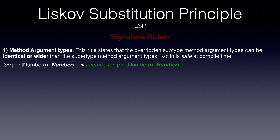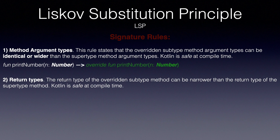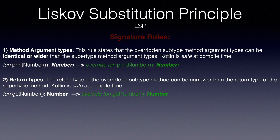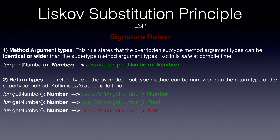Next, return types: the return type of the overridden subtype method can be narrower than the return type of the supertype method. Kotlin is again safe at compile-time, but you can actually have a more specific type than its super method as the return type of the overridden method. For example, if we have a getNumber method that returns a Number, you can override it and return a more specific Float type. The idea is that if the caller can handle Number, which contains Float, it can also handle Float. You cannot return a more generic type, such as Any, since the caller almost surely does not handle it.